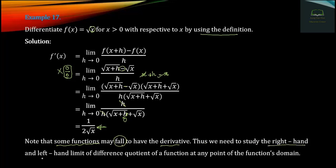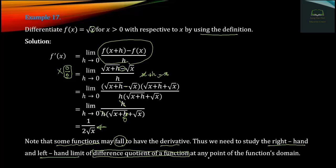The right-hand limit and left-hand limit approach. Let's take a different example of a function. The function here is a different case where the knowledge is based on different levels. The graph of the function involves considering both sides.